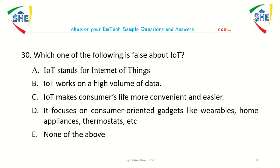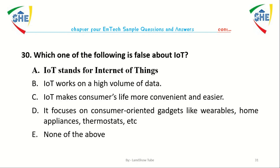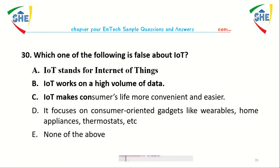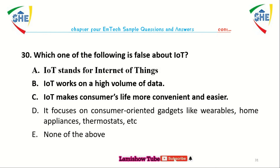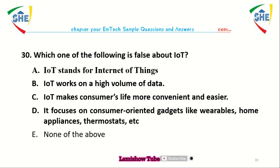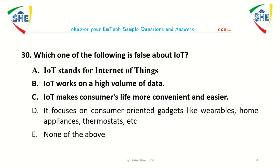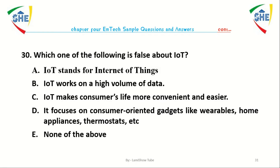Question number thirty: Which one of the following is false about IoT? A. IoT stands for Internet of Things. B. IoT works on a high volume of data. C. IoT makes customer life more convenient and easier. D. It focuses on customer-oriented devices like wearables, home automation, or home appliances such as thermostat and AC. E. None of the above.